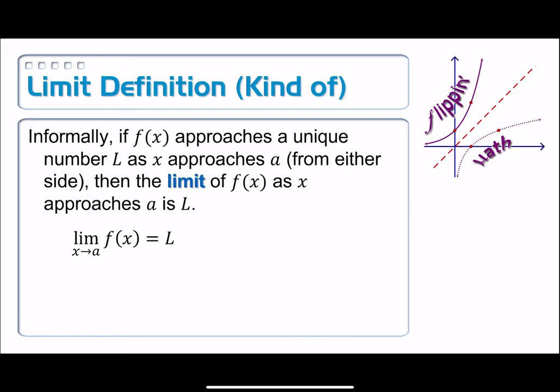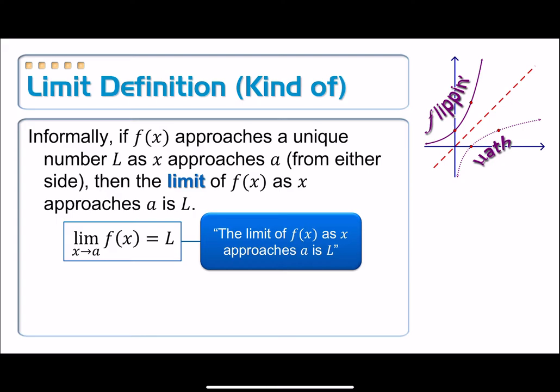Here is the notation, which can be read in a variety of different ways. The limit of f of x as x approaches A is L. All of those prepositional phrases are interchangeable. You can say as x approaches A, the limit of f of x is L, or the limit as x approaches A of f of x is L.